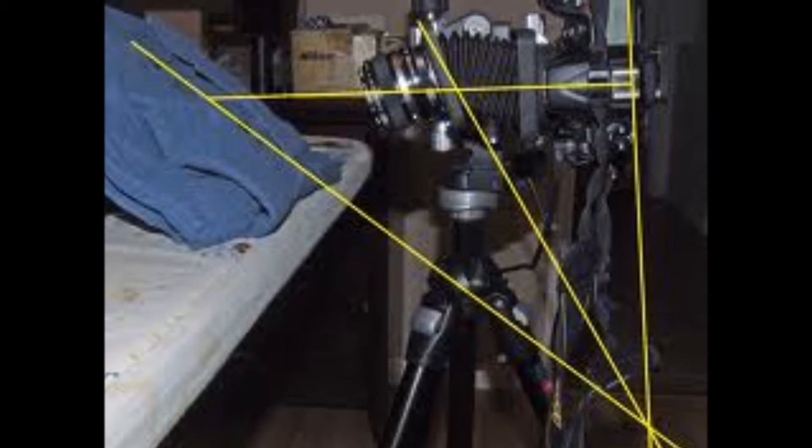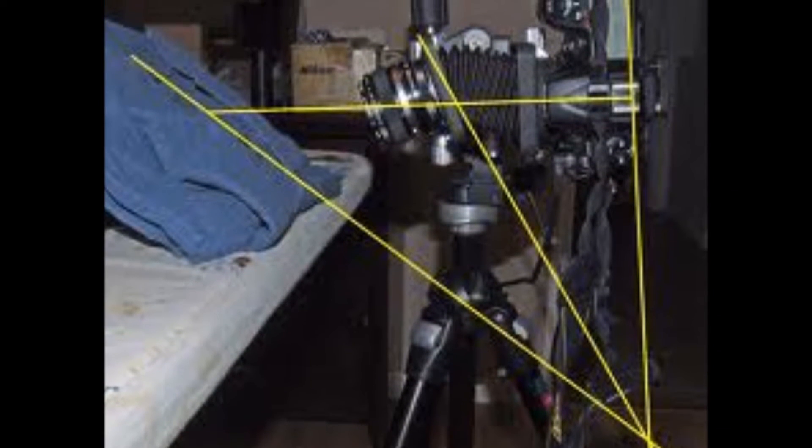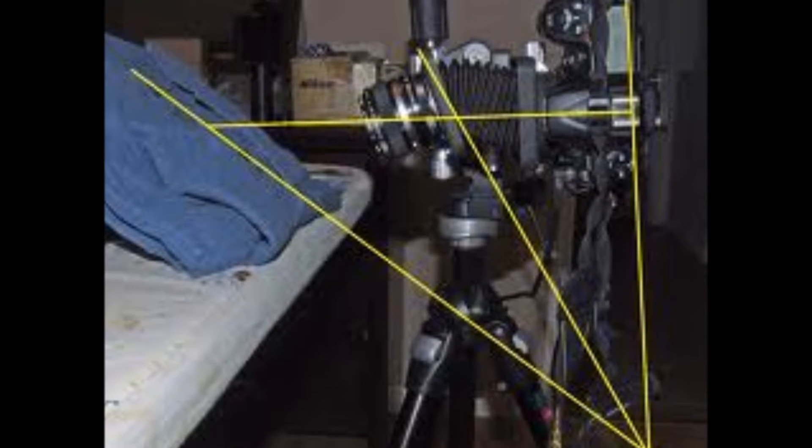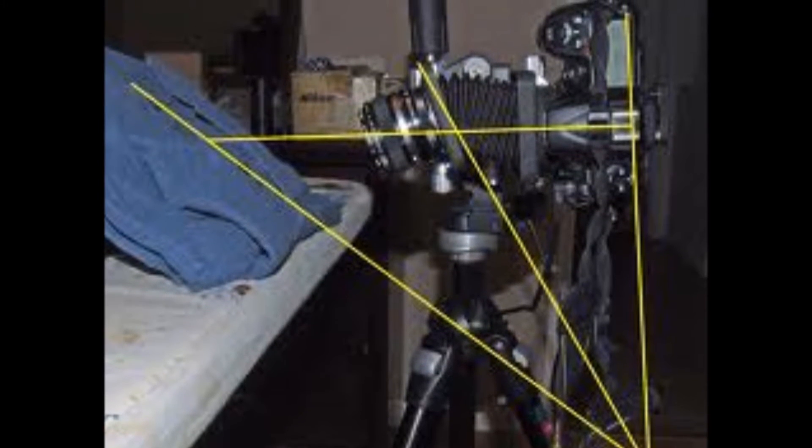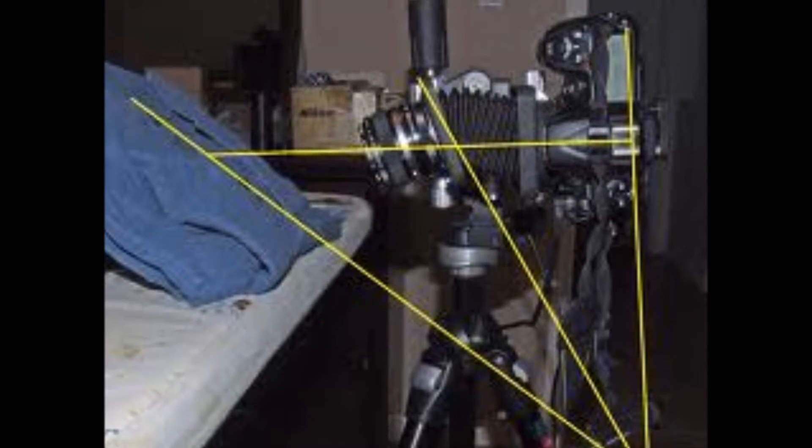However, when the light from an object enters the plane of the lens at an angle, only a small region of the object is in focus, and the rest of the object is distorted.